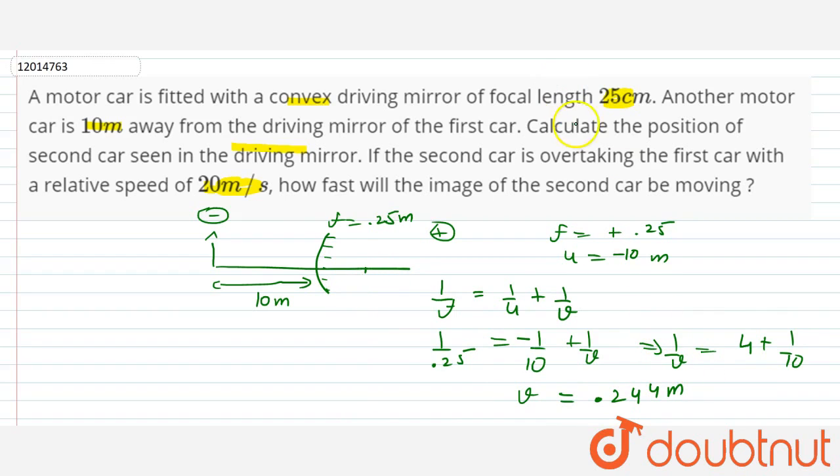We have to find out the position of the image. The second car is at this position. Now we have to find out the speed.